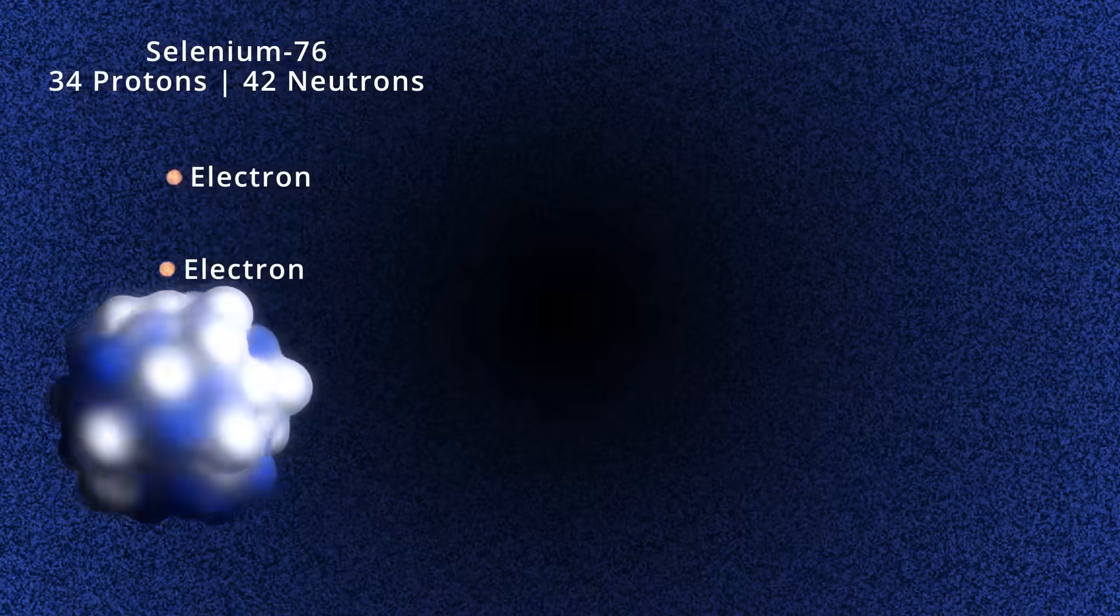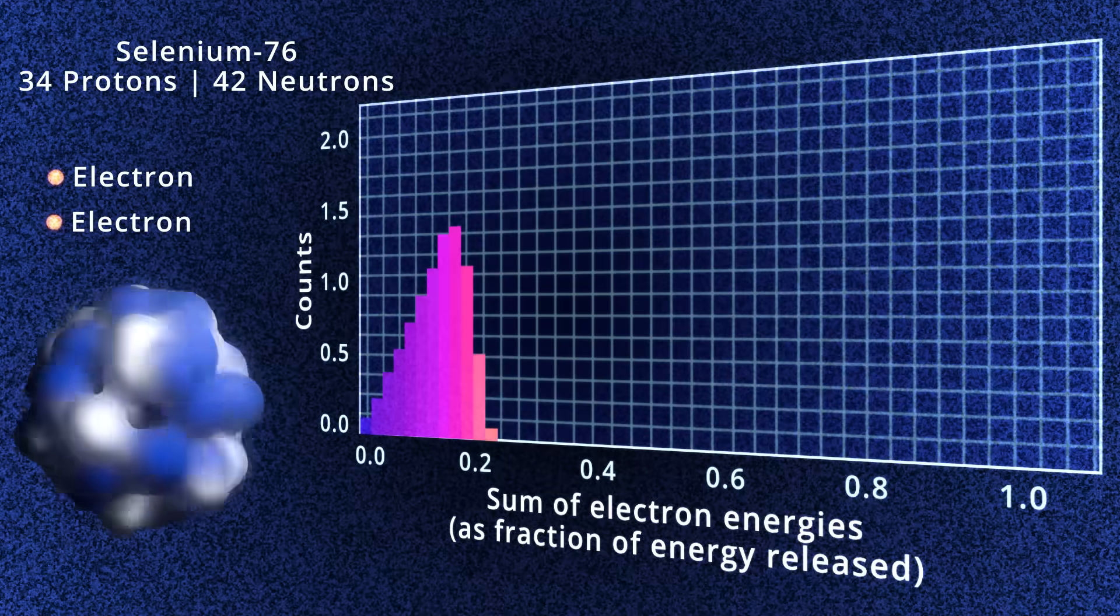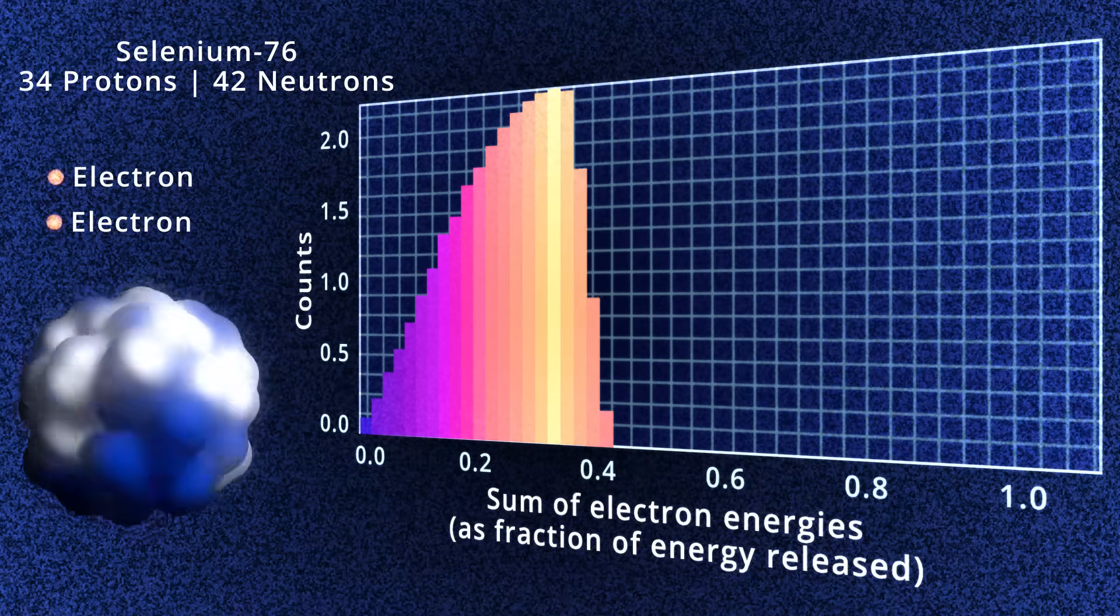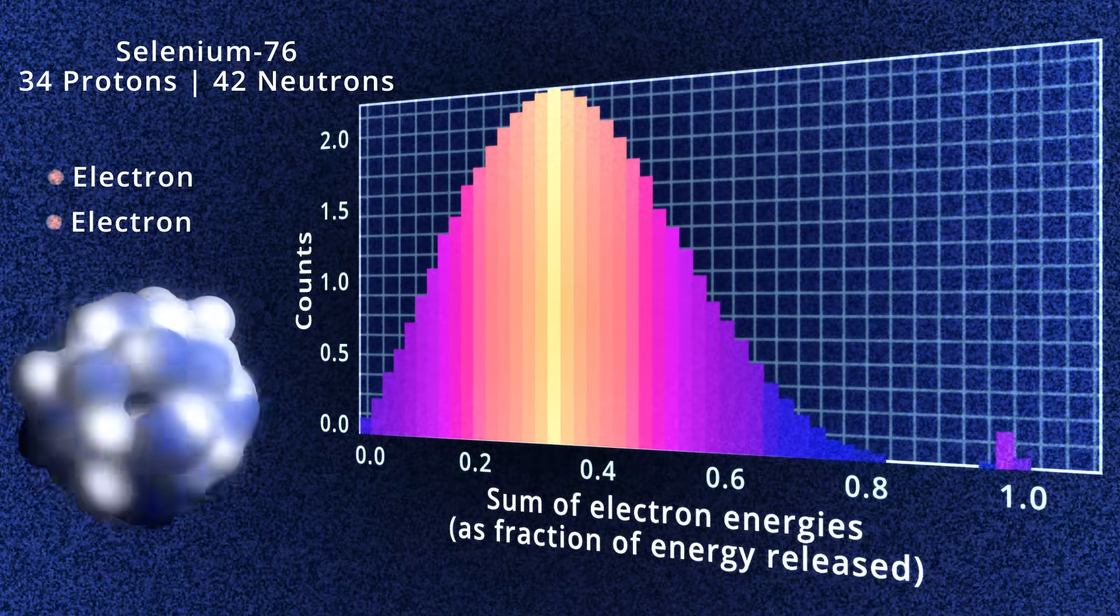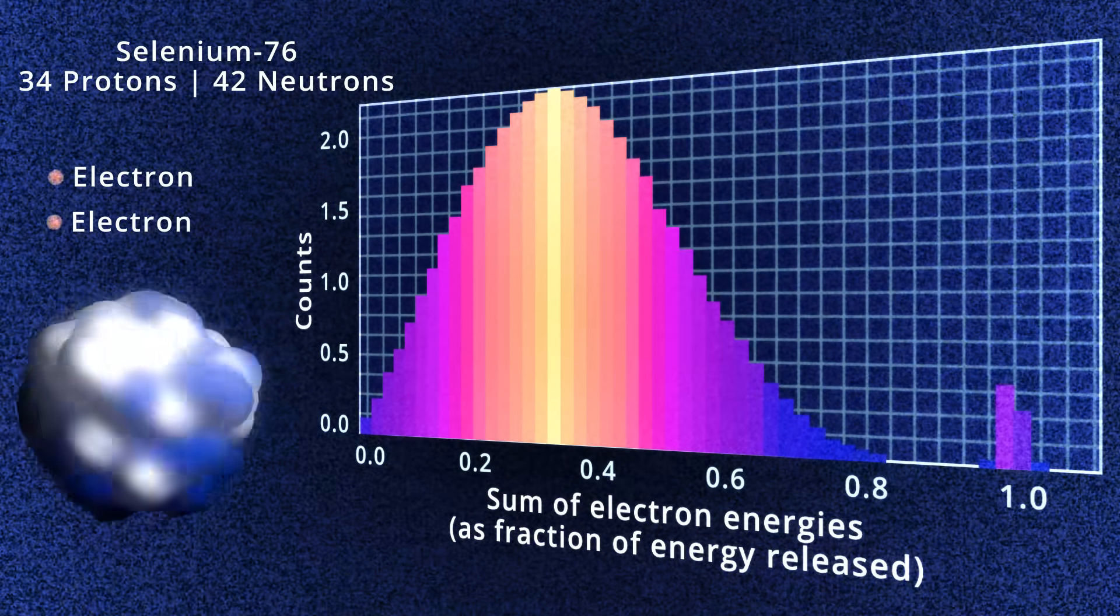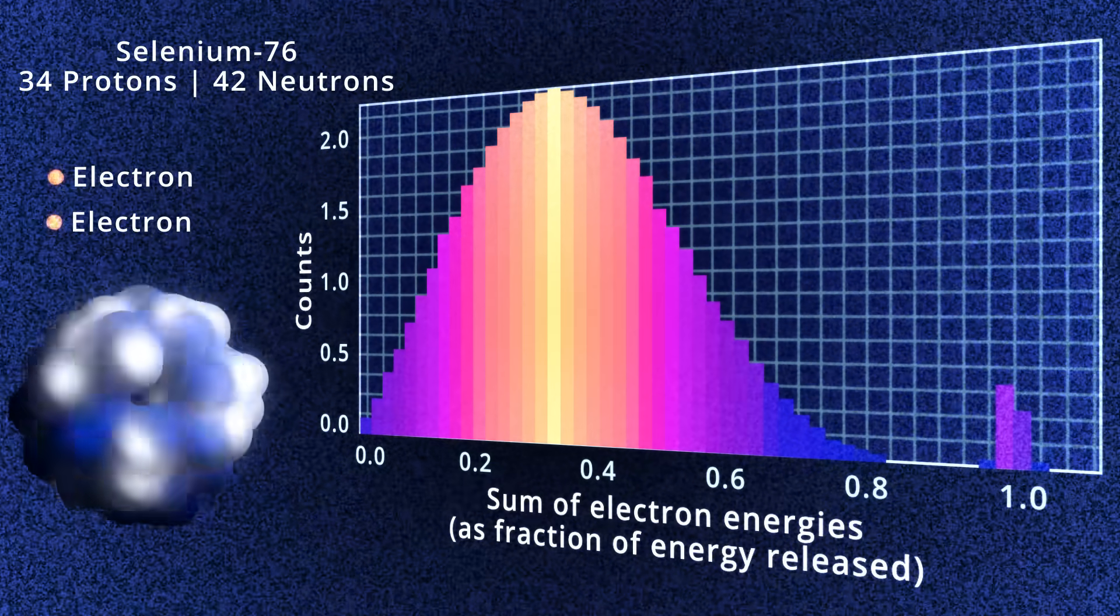Since there are no more neutrinos to carry away the energy, the sum of the electron energies must become unity due to the conservation of energy. The telltale signature would thus be a small increase in probability at unit energy.